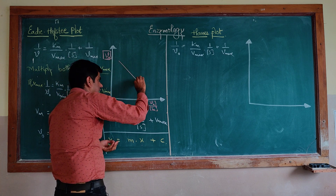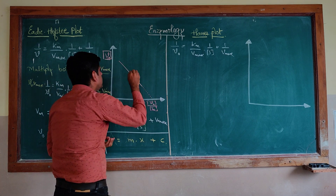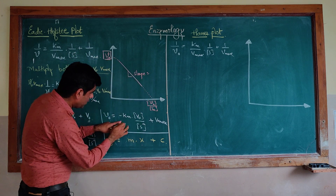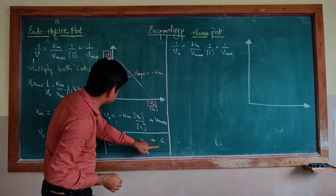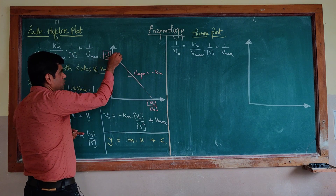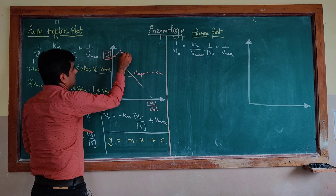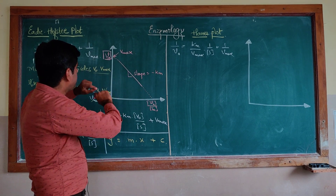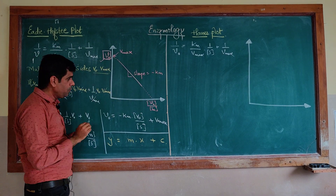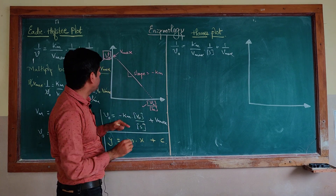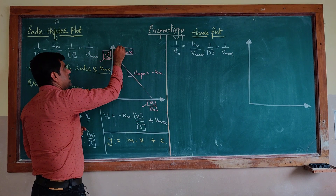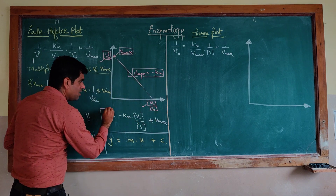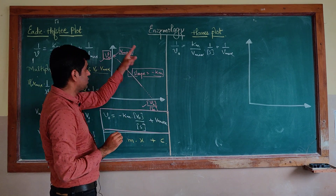The graph you get is a straight line with a negative slope. The slope of this line is −Km, and the intercept on the Y-axis is Vmax. So to summarize the Eadie-Hofstee plot: Y-axis is V0, X-axis is V0/S0, the Y-intercept gives Vmax, and the slope equals −Km.